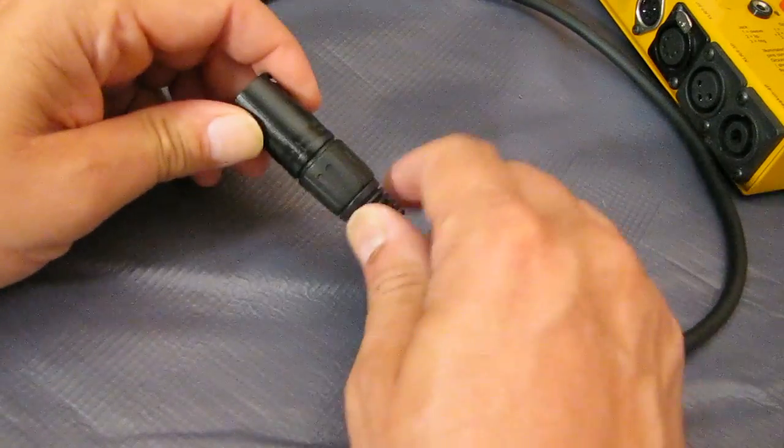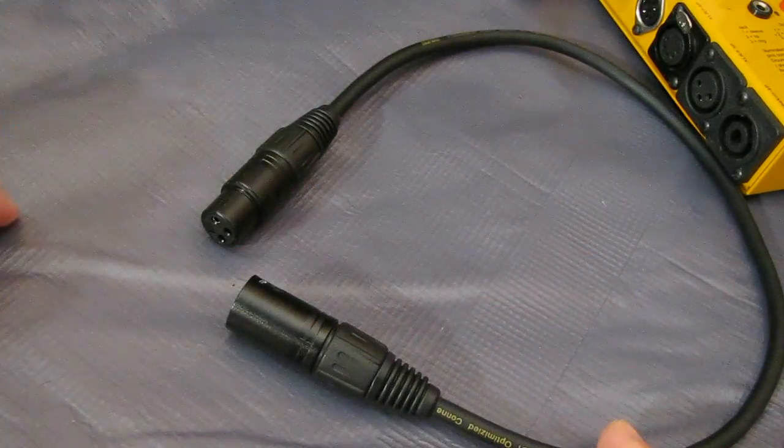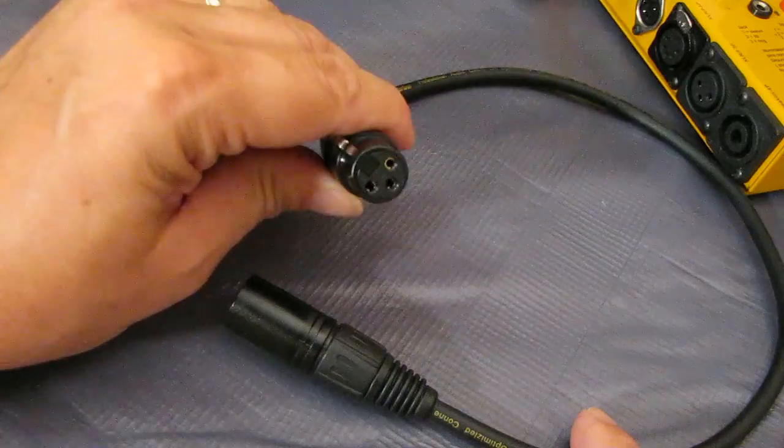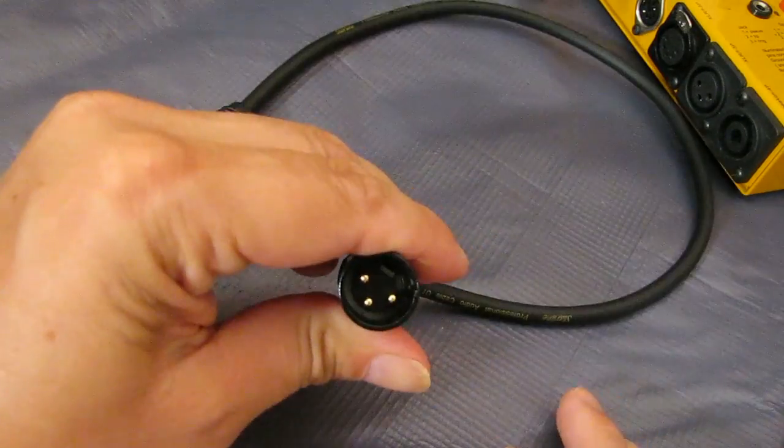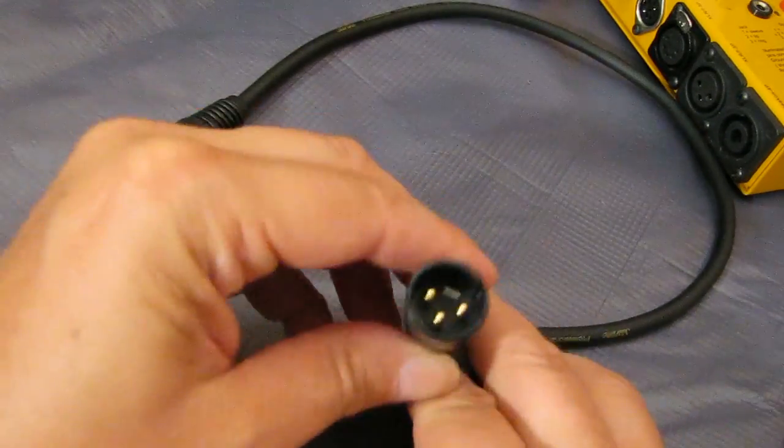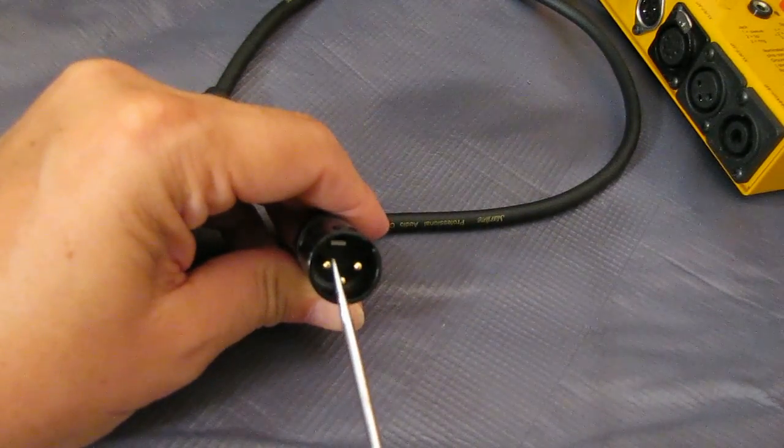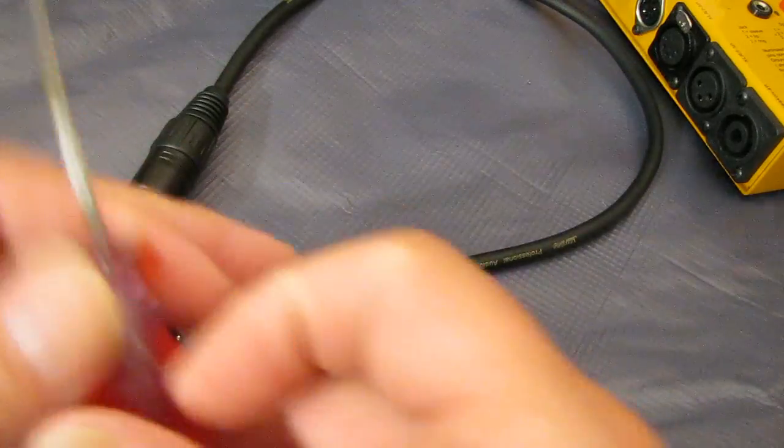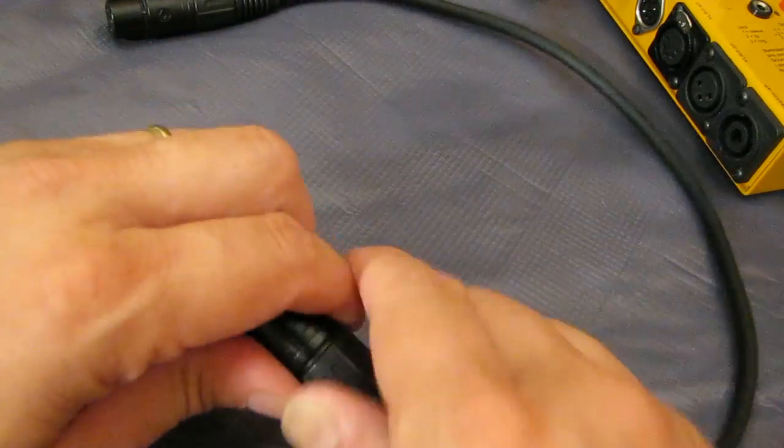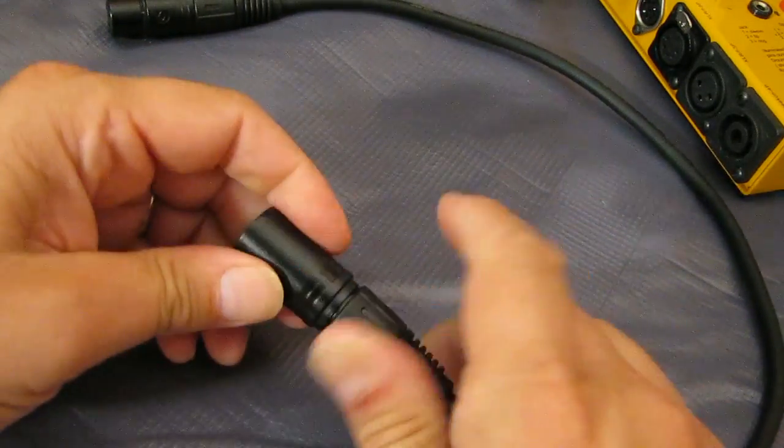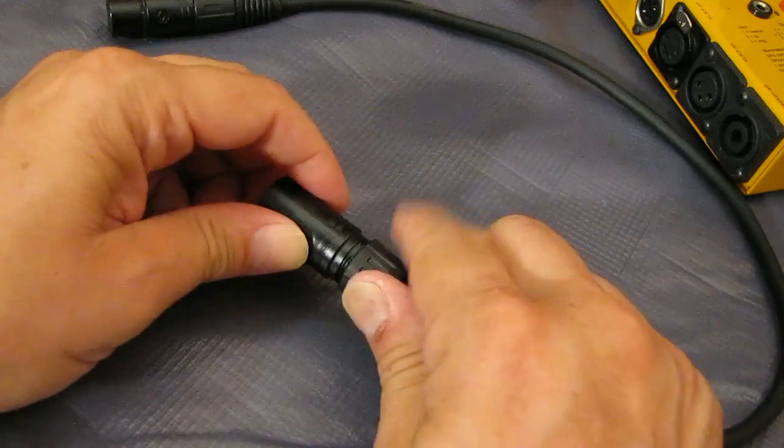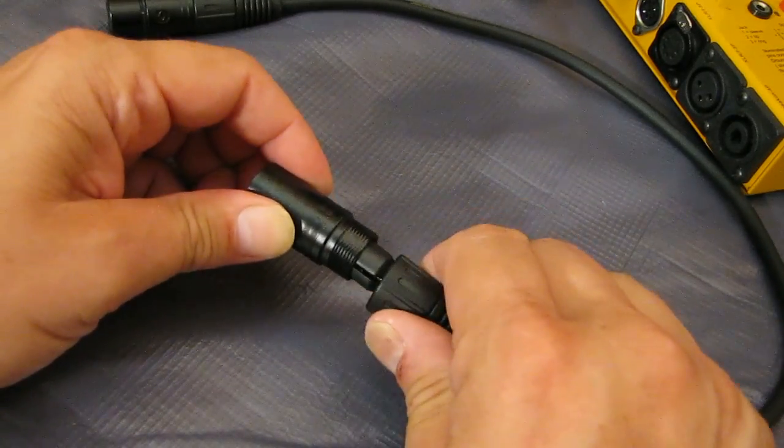So what we're going to do is we're going to take this regular little jumper cable, everything is connected in it right now, so what we're going to do is we're going to get rid of this connection right here. This is actually very simple to do, you just have to spend a little time working on it. So first thing we're going to do is we're going to take the cable apart.